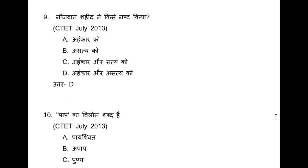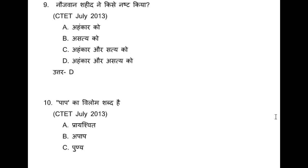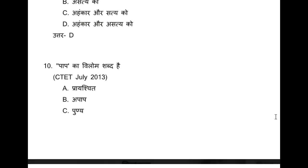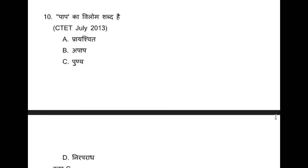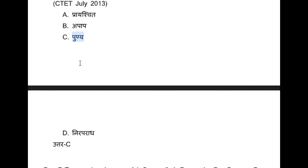Question 10: Paap ka vilom shabd kya hai? This is a very easy grammar question. Options are: praschit / apap / punya / nirapradh. Looking at the options it is clear that paap ka vilom shabd is punya — option C is correct.